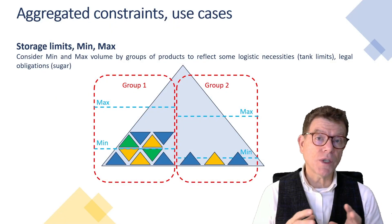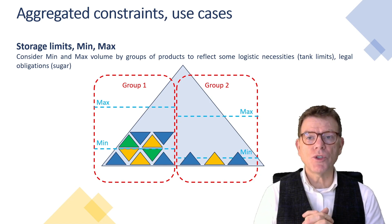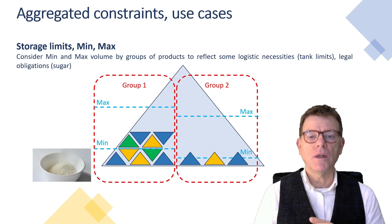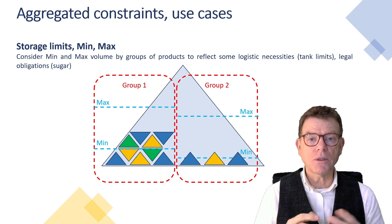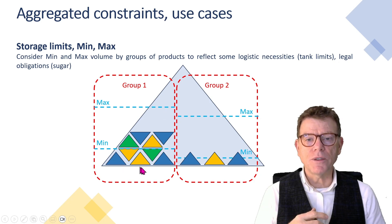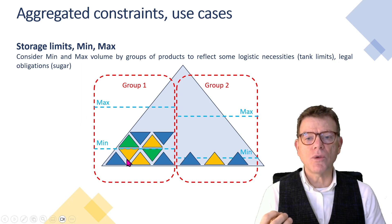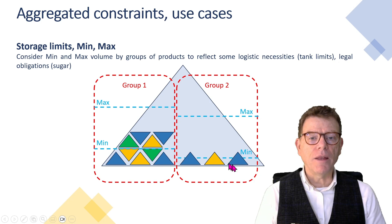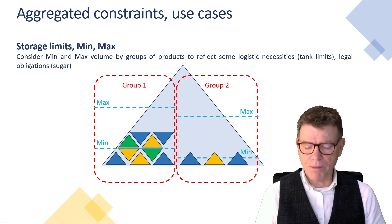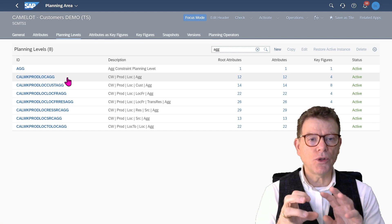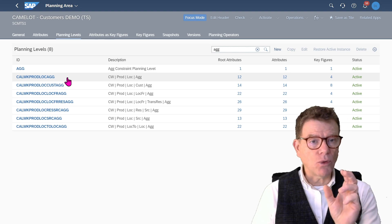Although there are many other use cases, let's close this chapter with the last one: aggregated constraints applied to storage limits. In some businesses, you may have legal requirements to hold in stock certain volumes — for instance, sugar or alcohol. In the company, sugar products or alcohol products can be many. In this example, for the sugar group — group one — we have four different products representing sugar, and legally the company must have a minimum and maximum independently of the packaging. Likewise for the alcohols, with only two different products. With aggregated constraints, you can define this by means of the prod-loc aggregated planning level, which allows you to regroup product and location together and establish those constraints at the group of prod-loc level.